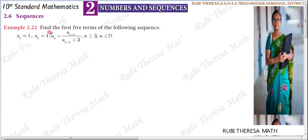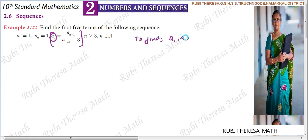This sequence is defined with a general term. The general term is used to denote the sequence. We need to find the first 5 terms: a1, a2, a3, a4, and a5 — the first, second, third, fourth, and fifth terms.